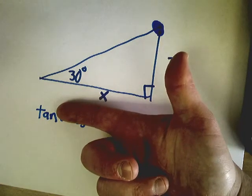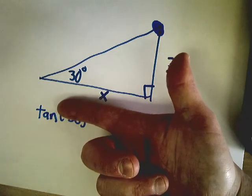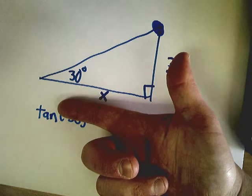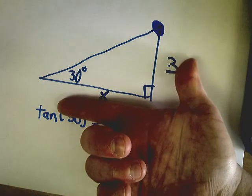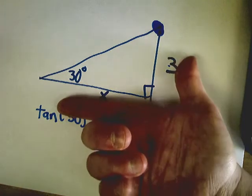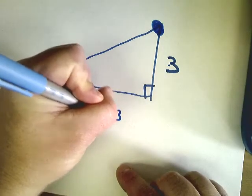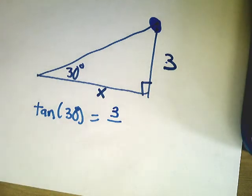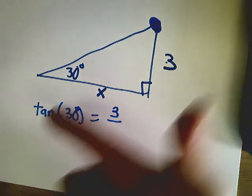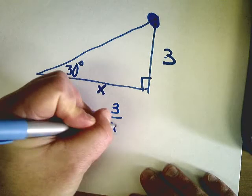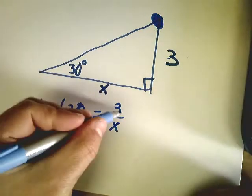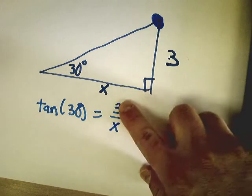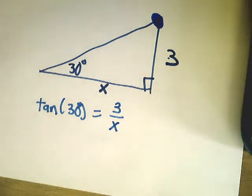Now we get to 'to and fro.' The word 'to' starts with T — so does 'thumb.' So 'to' means the number with your thumb goes on top of the fraction. 'Fro' starts with the same letter as 'finger' — and your finger is on the bottom. So whatever is on your thumb goes on top, whatever is on your finger goes on the bottom. Hence: tan on the hand, to and fro.